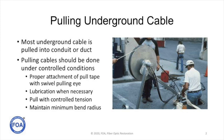Pulling underground cable should be done under controlled conditions. The cable should be properly attached to a pull tape with a breakaway swivel pulling eye. The duct should be lubricated when necessary, when friction creates too much tension. You should pull with controlled tension, which can be done by the capstan itself that you pull the cable with. What we want to talk about now is maintaining a minimum bend radius for the cable to prevent damage to the cable and the fibers inside it.